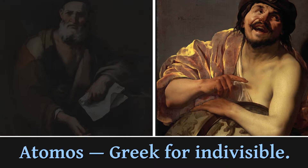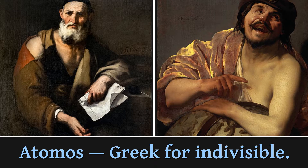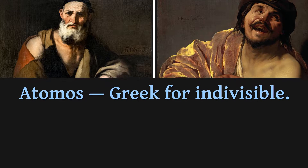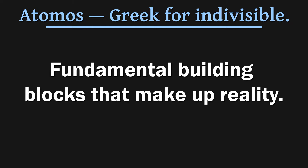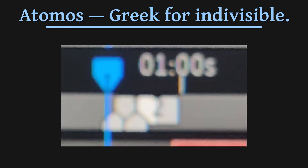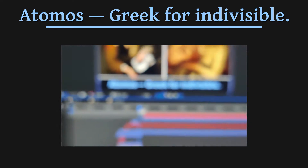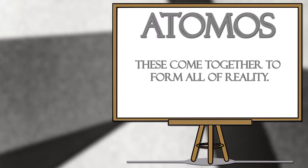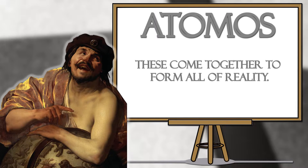However, he mainly refined and elaborated on the ideas of his master. Their agreed-upon properties of the atomos were that these were the fundamental building blocks that, once coming together, made up reality as we know it. Like pixels to a digital screen, the image emerges from its constituent parts. While this may seem eerily correct for his time, Democritus had a difficult time pitching his ideas to his peers, mainly because there was a much bigger figure who had a conflicting theory.